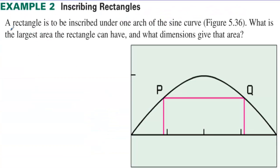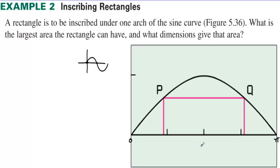Inscribing rectangles. A rectangle is to be inscribed under one arch of the sine curve. What is the largest area the rectangle can have and what dimensions give that area? Here's one arch of the sine curve graphed from 0 to pi. We start at 0 and the curve gets back to the x-axis — sine is 0 at pi.